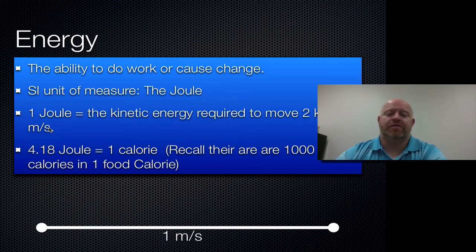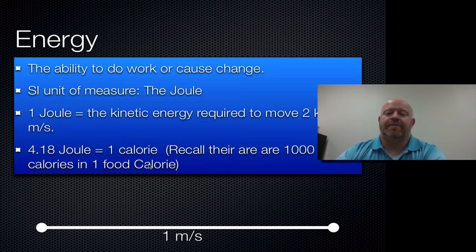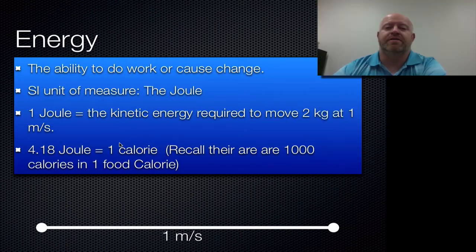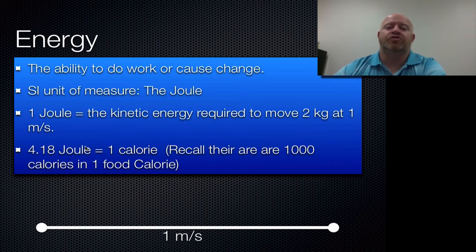A term you might be more familiar with is the calorie. There are 4.18 joules in one calorie. The calories we see on food items are not the same calories we're talking about here. Food calories are capitalized; normal calories are not. The capital C in a calorie stands for a kilocalorie — basically a thousand science-world calories in one food calorie. So if a Snickers bar has 273 food calories, that means there are 273,000 of these small calories, which means converting to joules would be 273,000 times 4.18 — over a million joules. So a joule is a really, really small amount of energy.